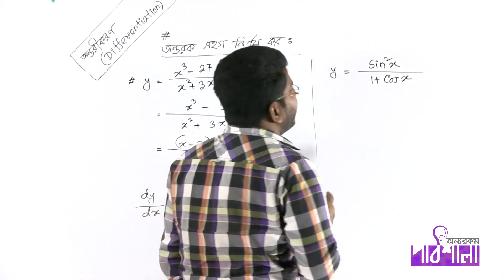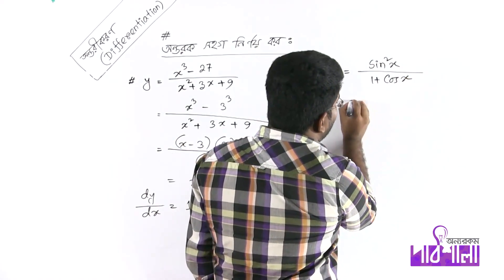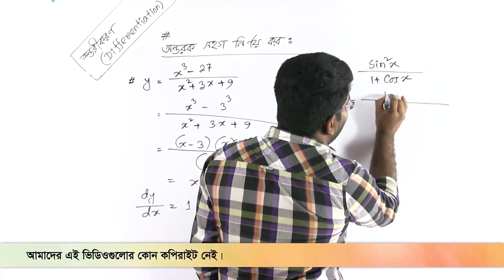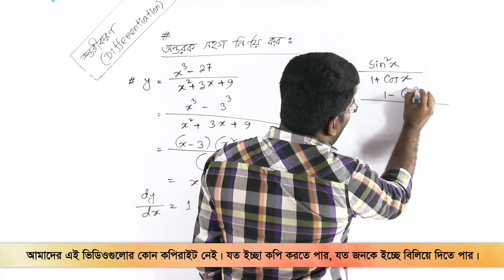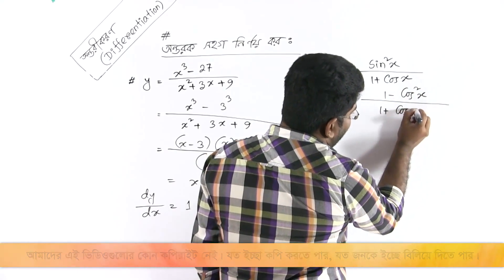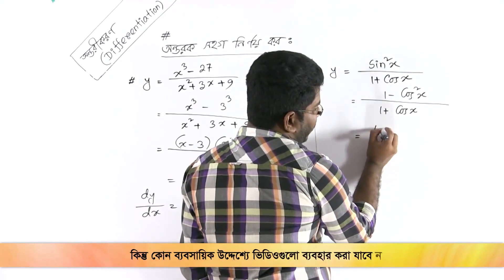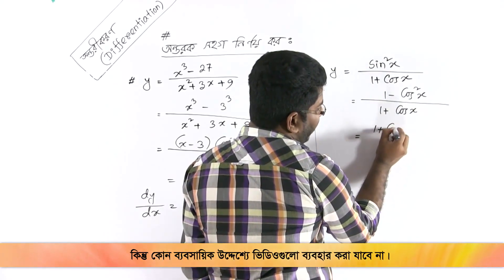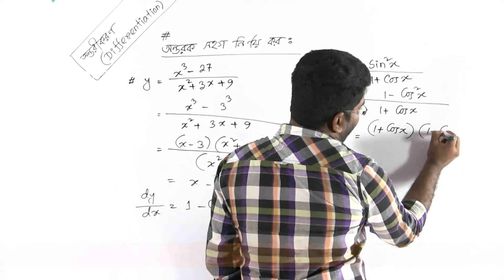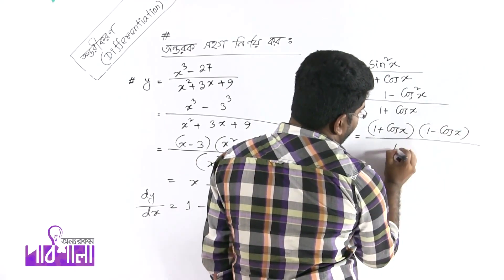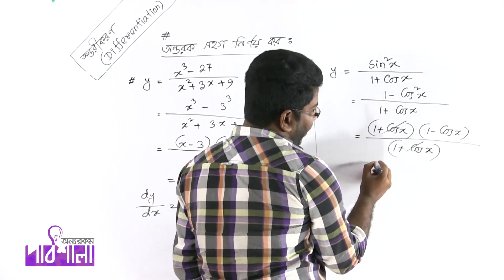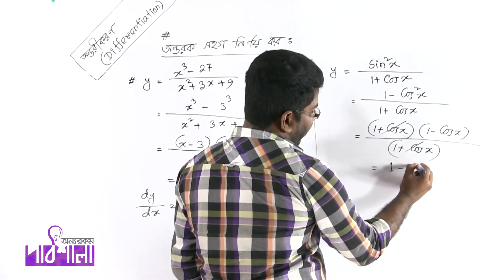Next: y = sin²x / (1 + cos x). We rewrite sin²x as 1 - cos²x, which factors as (1 - cos x)(1 + cos x). Dividing by (1 + cos x), the (1 + cos x) terms cancel, leaving y = 1 - cos x.